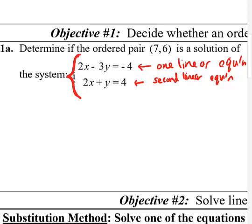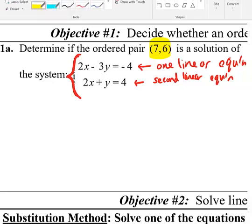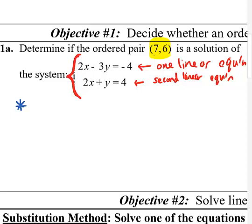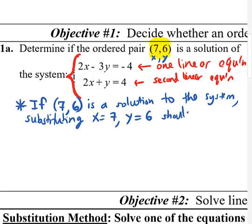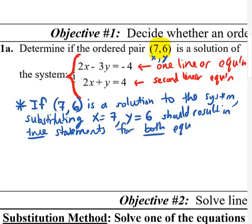The first thing is: do we know how to determine if a certain ordered pair, like 7 comma 6, is a solution of a system? If you haven't seen this before, the idea is you should be able to substitute the values 7 and 6 in for x and y respectively, and you should get a true statement for both of those equations. If that particular ordered pair is a solution to the system, substituting x equals 7 and y equals 6 should result in true statements for both equations.